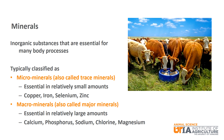Minerals are inorganic substances that are essential for many body processes. Minerals are generally classified into microminerals or macrominerals. Examples of microminerals, which are also called trace minerals, include copper, iron, selenium, and zinc. These minerals are needed in relatively small amounts by the animal. Examples of macrominerals, which are also called major minerals, include calcium, phosphorus, sodium, chlorine, and magnesium. These minerals are needed in relatively large amounts by the animal.